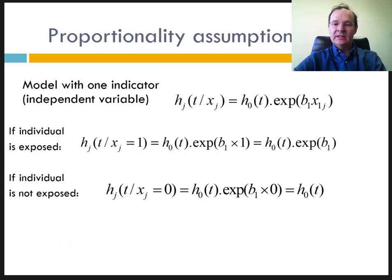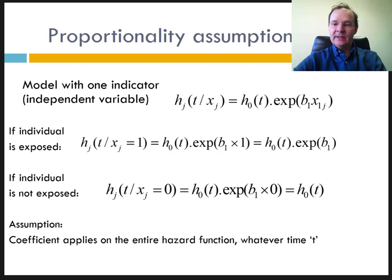We can see that the exponential of b1 does not depend on t and therefore applies multiplicatively to all the values of h0(t). It is therefore assumed that the explanatory variables apply to the entire hazard function, whatever t. This assumption of proportionality is quite strong and it is necessary to test it for each variable of the model.